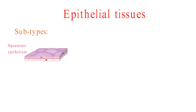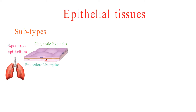Squamous epithelium is made up of flat, scale-like cells. It is found in areas where there is a need for protection or absorption, such as the lining of the lungs and the blood vessels.